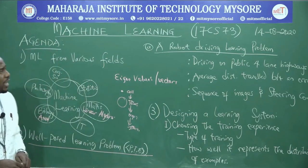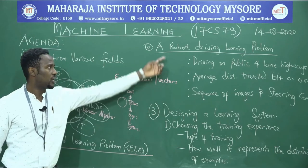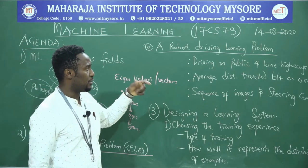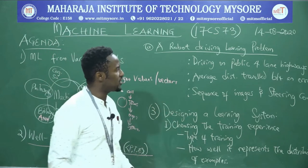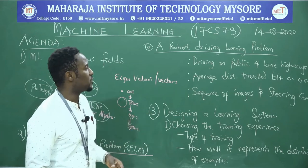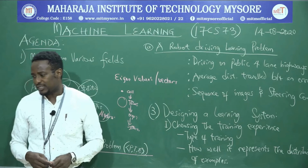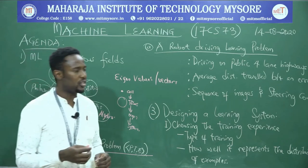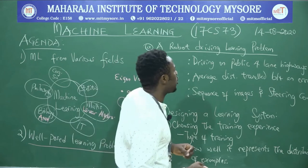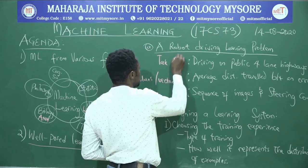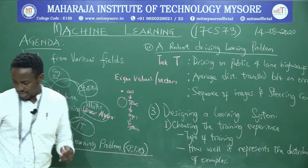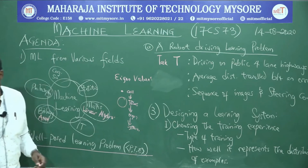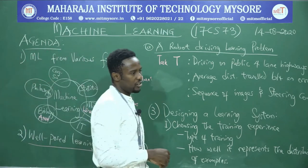Fit the three keywords — performance, task, and experience — into the driverless car scenario. There are three assignments: driving on a public four-lane highway using sensors; average distance traveled before an error occurred; and a sequence of images and steering commands. Driving on a public four-lane highway is the task T.